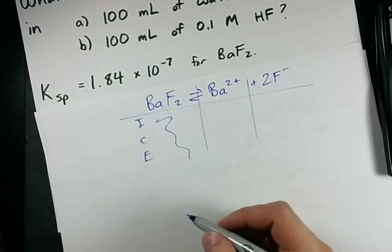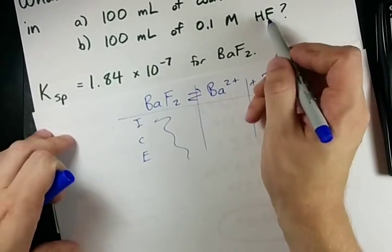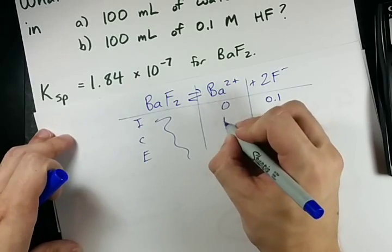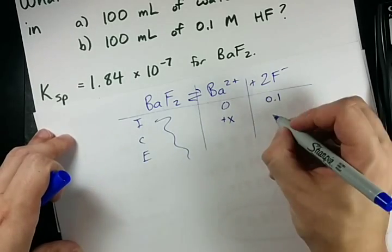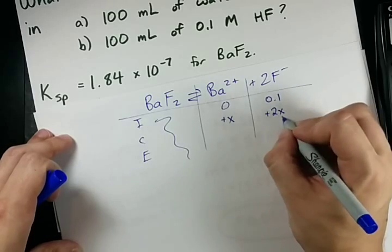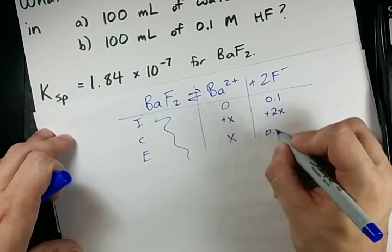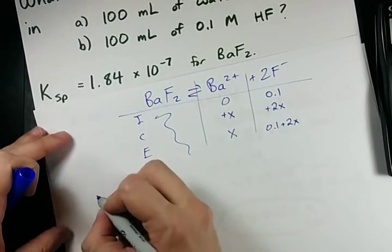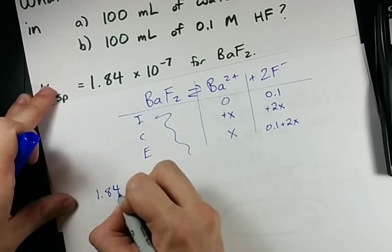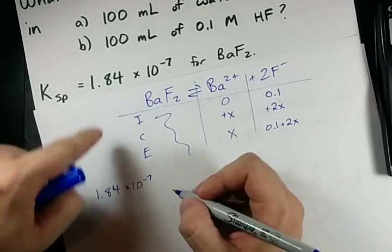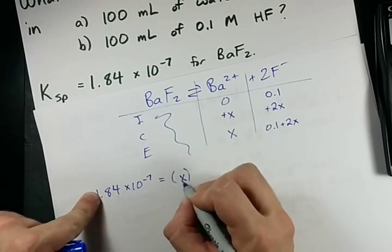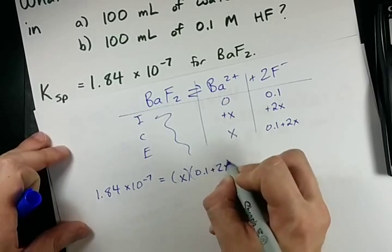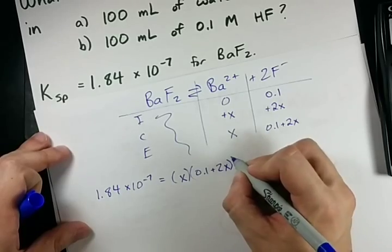But the difference here, doesn't matter because it's solid. The difference here is that your initial concentration of fluoride is 0.1, not zero. You still gain some Ba2+ pluses. You still gain 2 times that amount in fluoride. But your equilibrium concentration is not just 2x anymore.